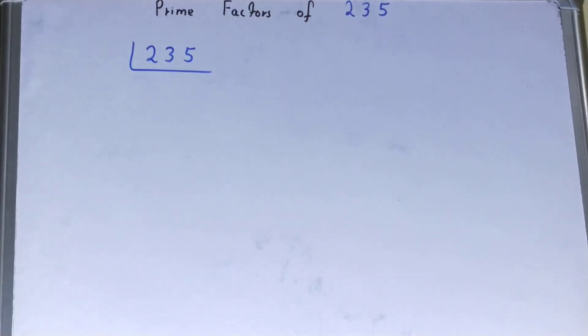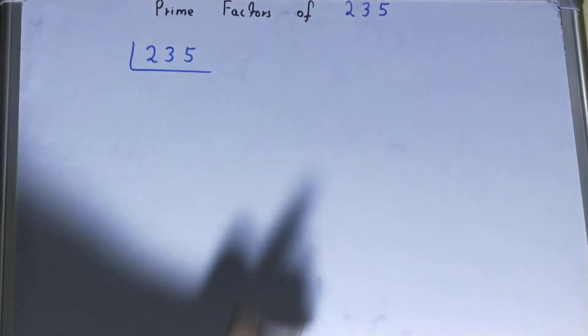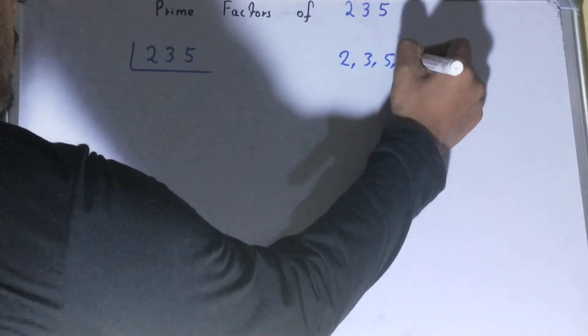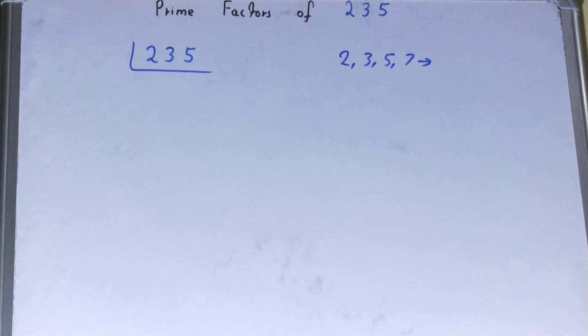Before solving this, you must have an idea about what prime numbers are. Prime numbers are numbers that are divisible by one and themselves only, like 2, 3, 5, 7, and so on.